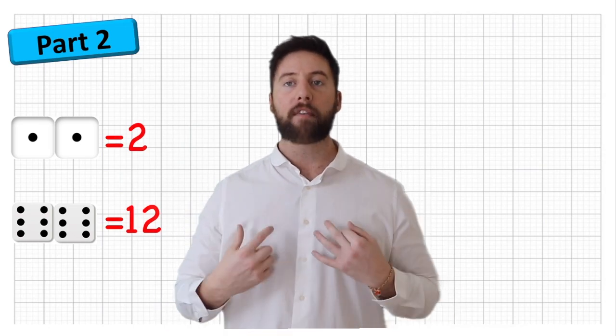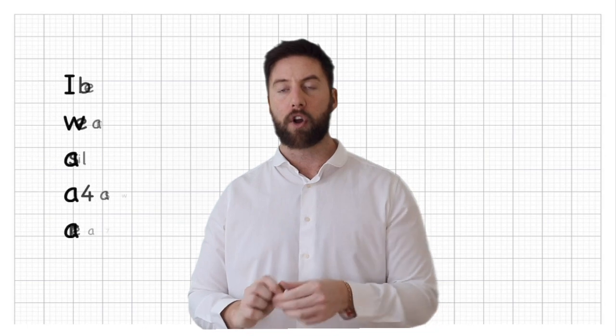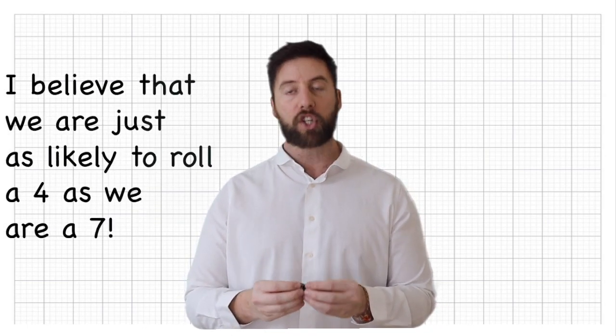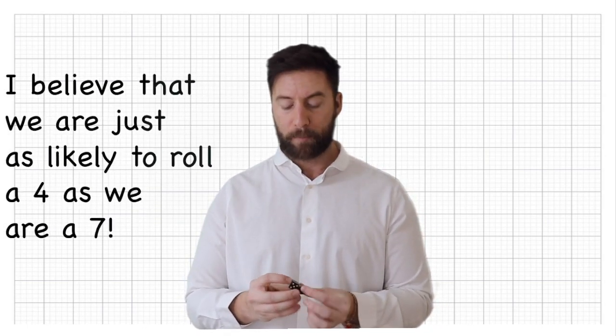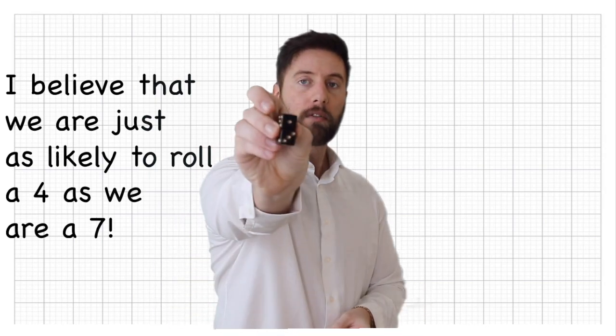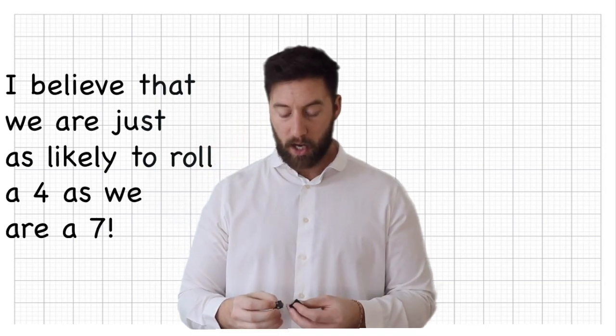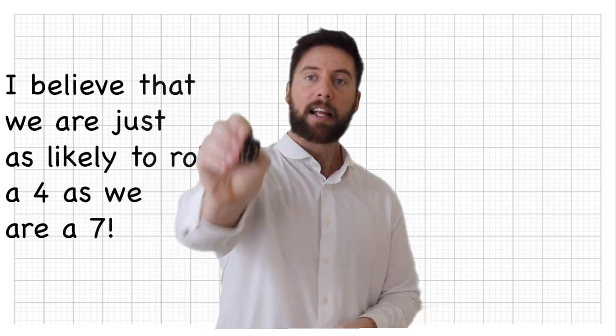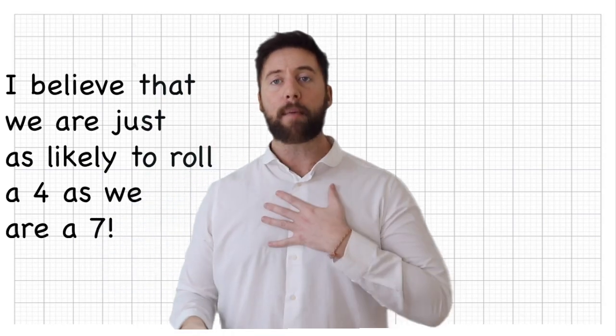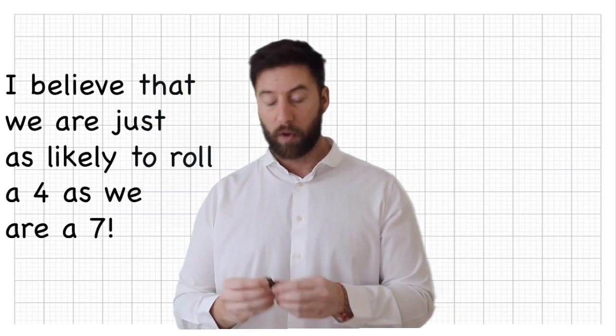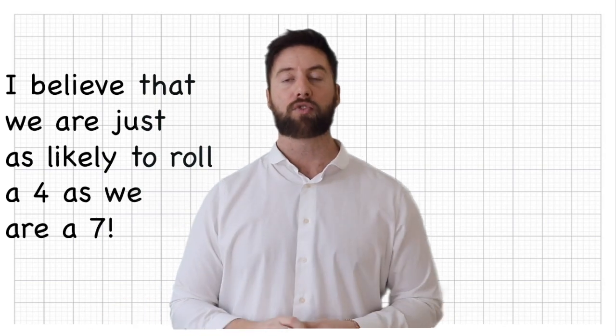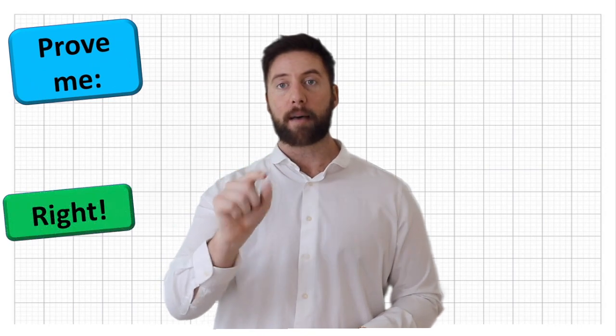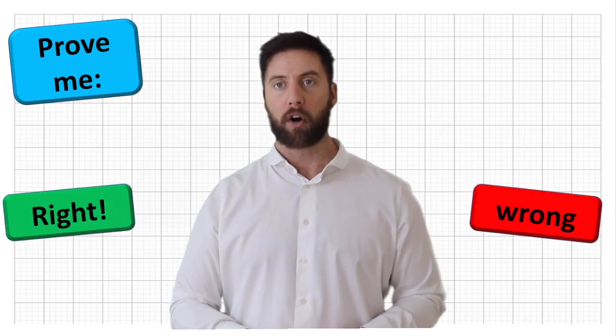Now I've got a statement that I want you to either prove correct or prove wrong. I believe we are just as likely to roll a combined total of 4 as we are a combined total of 7. So I believe that we are just as likely to roll a 4 as we are to roll a 7. Your job is to either prove me right or prove me wrong.